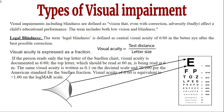The first kind of visual impairment is legal blindness, defined as central visual acuity of 6/60 in the better eye after the best possible correction. Visual acuity (VA) is expressed as a fraction: test distance divided by letter size. For example, if a person reads only the top letter of the Snellen chart, the visual acuity is 6/60 — meaning a letter that should be read at 60 meters is only read at 6 meters. This is also written as 0.1 on the decimal scale, 20/200 on the American standard, and +1 on the LogMAR scale.